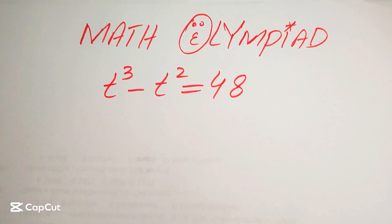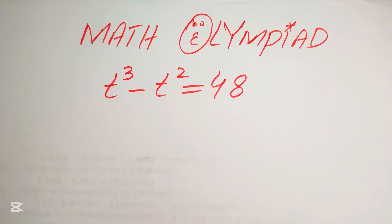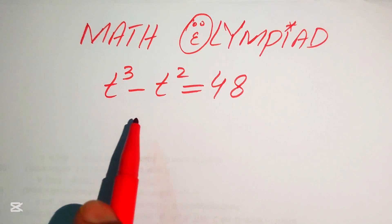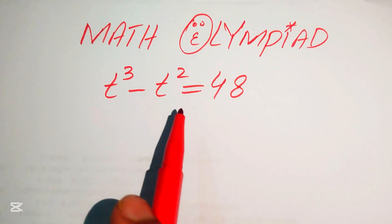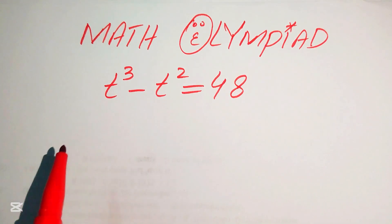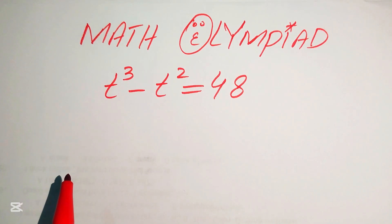Hello everyone, welcome to solve this nice math algebra problem. We have t cubed minus t squared equals 48, and we solve this problem for the values of t.